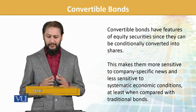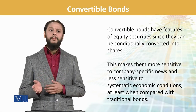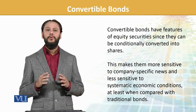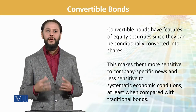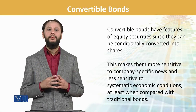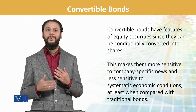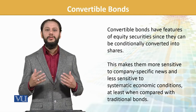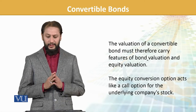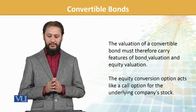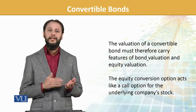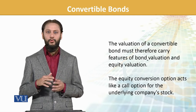Systematic indicators کا impact traditional bonds پہ زیادہ ہے۔ Systematic refers to interest rate and inflation, whereas for shares it's more about the company's actual performance and company-specific news. تو یہ دونوں کا impact convertible bond پہ آتا ہے۔ The valuation of a convertible bond must therefore carry features of bond valuation as well as equity, کیونکہ دونوں components ہیں۔